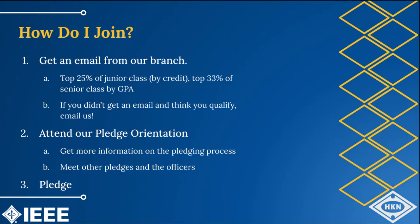Students become members of HKN by invitation. If your GPA is in the top one-fourth of the junior class or the top one-third of the senior class, expect an email from our branch inviting you to our pledge orientation. Class standing is decided by credit hour and the exact GPA to qualify will change every semester. If you think your GPA is high enough but you didn't receive an invitation, please email us. Once you get the invitation email, the next step is to attend our pledge orientation, where officers will detail the pledging process and you will get the chance to meet other potential pledges. Once you complete the pledging process, you're officially a member for life.